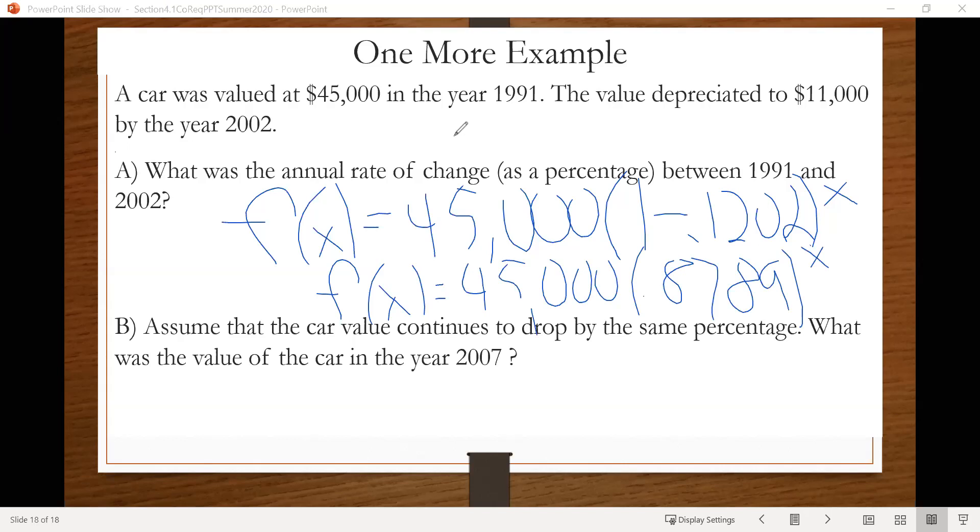And then we can very simply find the value of the car for 2007 by plugging something in for X. And remember, we're not going to plug in 2007 for X. For 2002, we plugged in 11 because that was 11 years after 1991. So for this one, we'll go ahead and plug in 16 because 2007 is 16 years after 1991. So do F of 16 equals 45,000 times 0.8798 raised to the 16th.